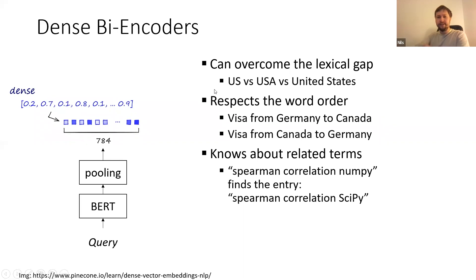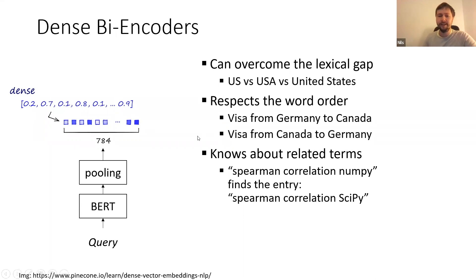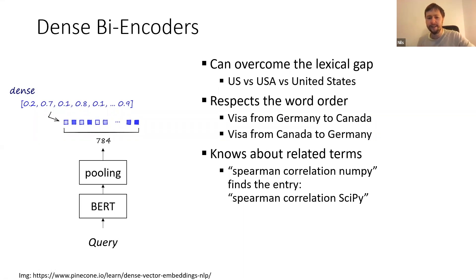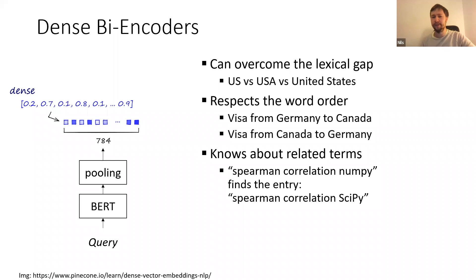First, dense search can overcome the lexical gap. In lexical search, if you search for 'capital of the United States' but the article talks about 'US' or 'USA', there is no match. Lexical search also does not respect word order — searching for how to get a visa from Germany to Canada versus the reverse cannot be differentiated. And lexical search doesn't know about related terms. If you search for Spearman correlation in NumPy but there's no such function there, dense embeddings can find an entry about computing Spearman correlation in SciPy, because the model has learned NumPy and SciPy are similar frameworks. Lexical search would just say there's no Spearman correlation in NumPy, which isn't helpful.